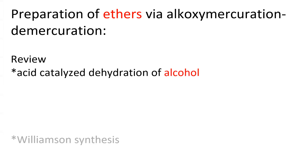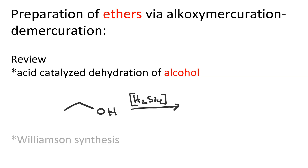Acid-catalyzed dehydration of an alcohol is a great way to make symmetric ethers. For instance, if I took ethanol and reacted it with concentrated H2SO4 and heat, I get diethyl ether — symmetric ethers.